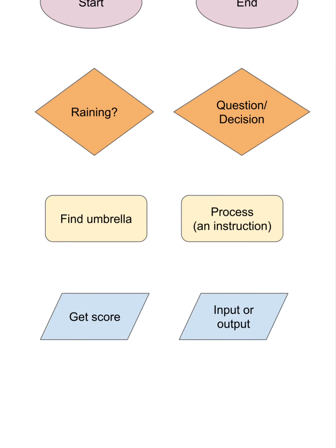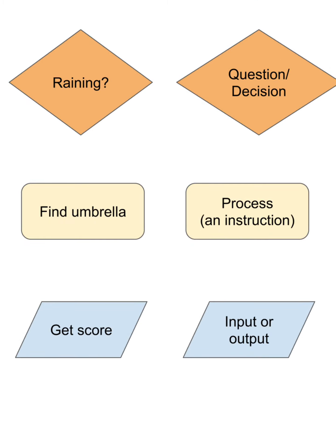The rectangles are your process or instructions in between your questions and getting to the end of your algorithm such as find the umbrella or don't take the umbrella or take the umbrella. And finally, the rectangles that look like they're sort of leaning over are for inputs and outputs. So if you're thinking about this as code, it's where you might get the score or create a variable or things like that. But you may not need those today.